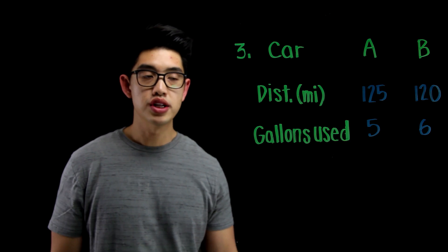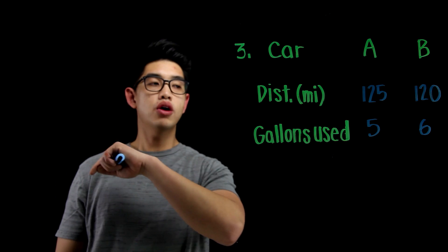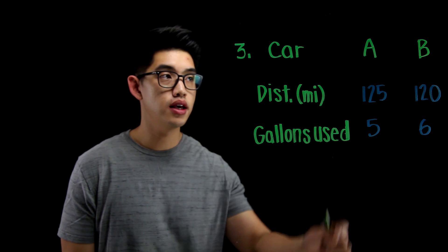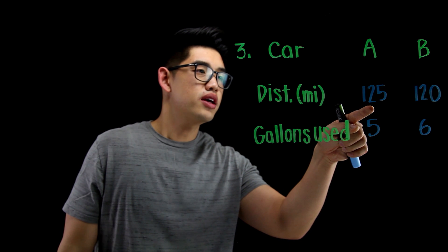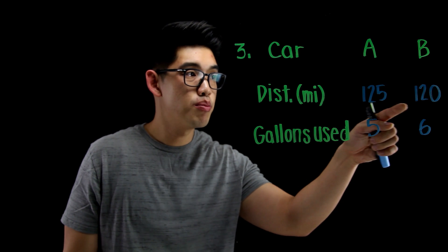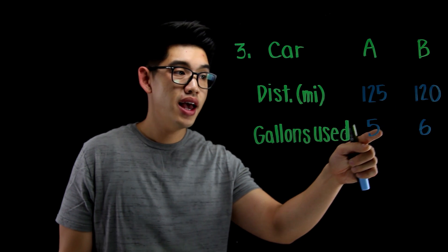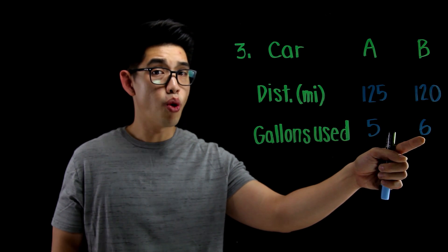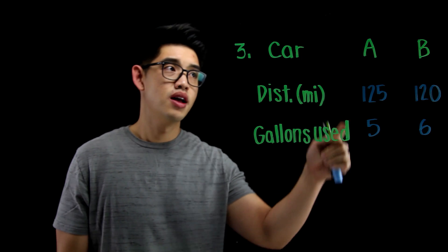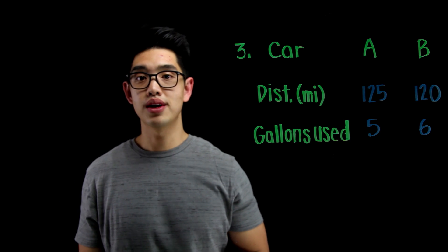Trick question. This is so easy. It's obviously A. A is the better car because, I mean, just think about it. It can go 125 miles. That's like more miles than 120. And it uses only 5 gallons. Why would you want to use more gallons, right? Save the planet. A is obviously the better choice.